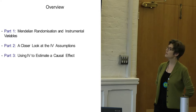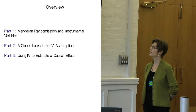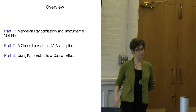I will take you through the basic ideas by first looking at a very prominent example — probably one of the most successful applications of Mendelian randomization — where we are interested in the effect of alcohol consumption on some health outcome, and we use a genotype to mimic the effect of alcohol.